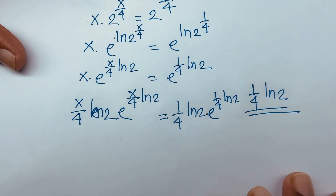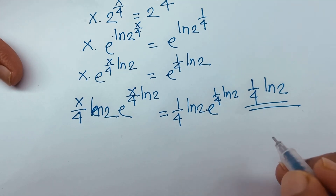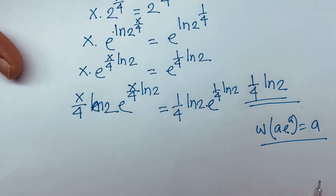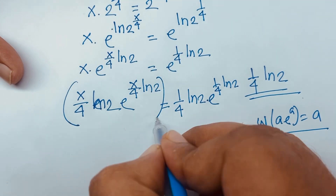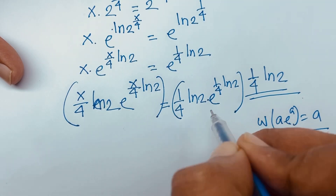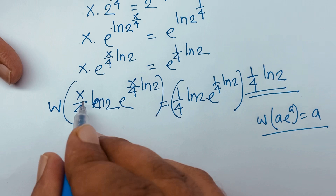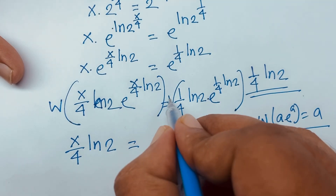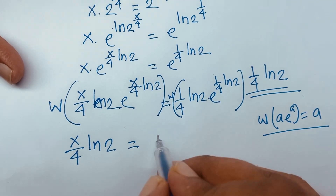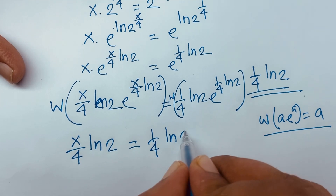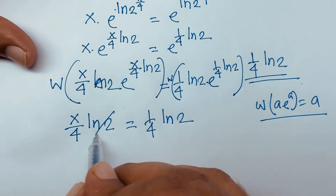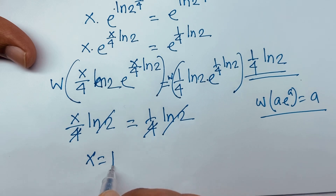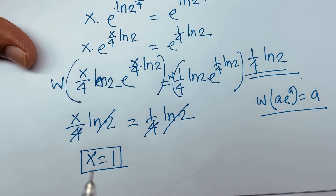At this moment, if I apply the Lambert W function to both sides — using the rule that W(a · e^a) = a — I can say x over 4 ln 2 is equal to 1 over 4 ln 2. Then ln 2 and ln 2 cancel, and 4 and 4 cancel. We find that x is equal to 1. This is our final answer: x is equal to 1.